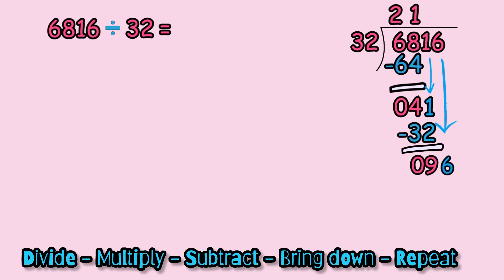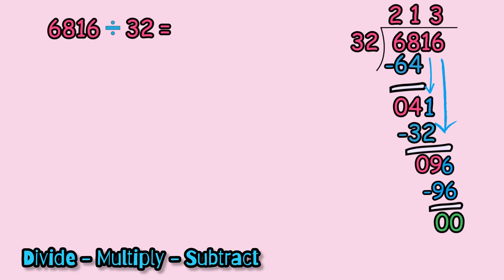The next step, very good, bring down the 6. And then we have to think how many times we have 32 into 96. I think it will be 3 because we already multiplied 32 times 1, we already multiplied 32 times 2, and we already saw the numbers. So let's see, let's try: 3 times 2 equals 6, 3 times 3 equals 9, very good. And then we have to subtract: 96 minus 96 equals 0, and the answer is 213, very good, with no remainder.